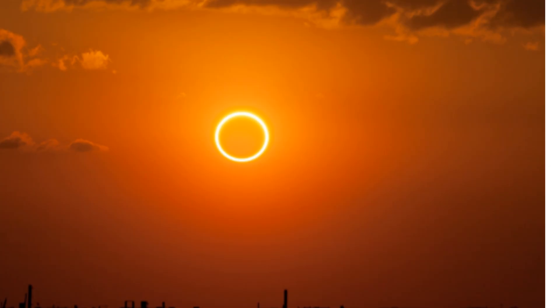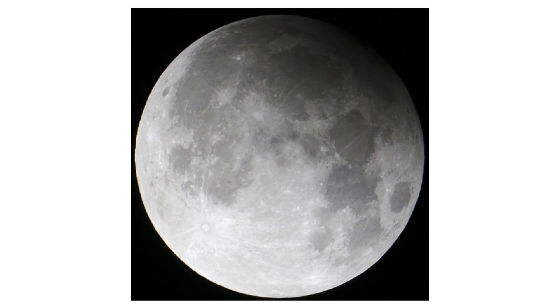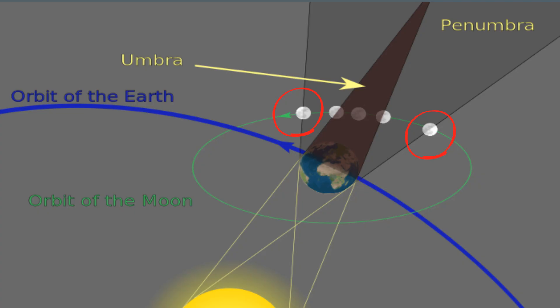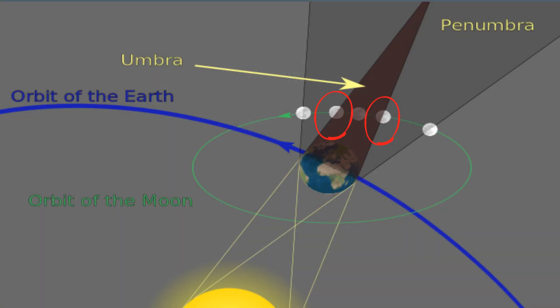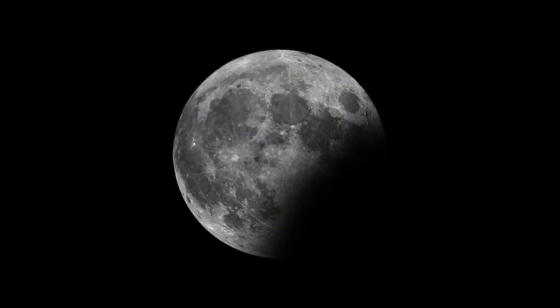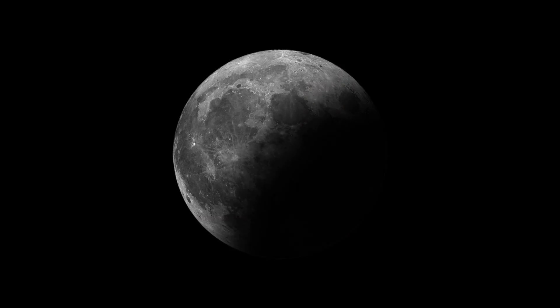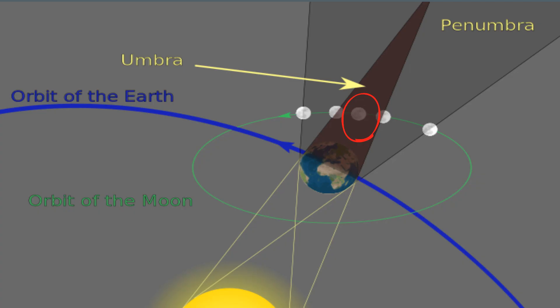There are also different types of lunar eclipses. A penumbral lunar eclipse is when the moon passes through the earth's penumbral shadow. A partial lunar eclipse is when a portion of the moon passes through the earth's umbral shadow — here's what this looks like. And finally, a total lunar eclipse is where the entire moon passes through the earth's umbral shadow.